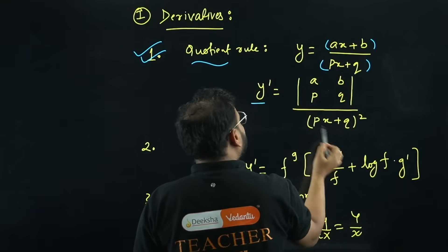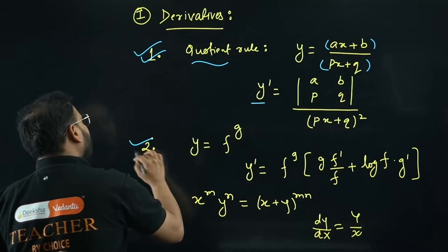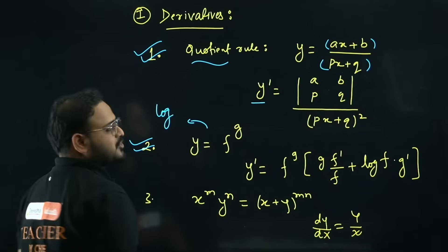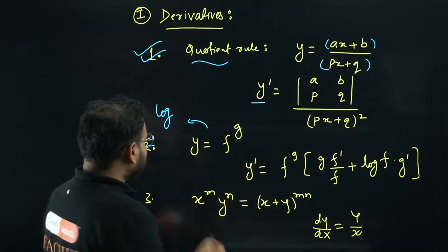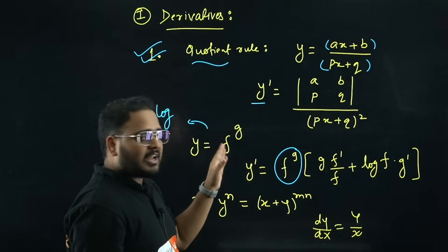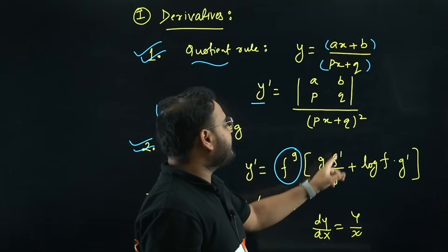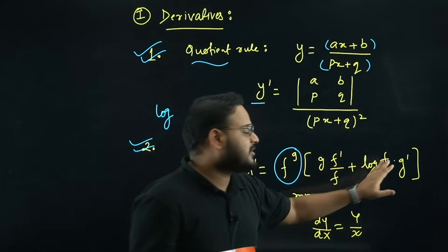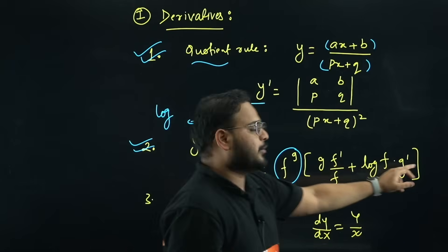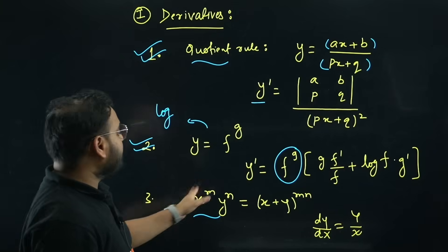Trick 1: Whenever you have a quotient rule involved and the form is (ax + b)/(px + q), you can find the derivative as the determinant of coefficients [a, b; p, q] divided by (px + q)². Trick 2: When you have y = f(x)^g(x), apply log. The formula gives: dy/dx = f^g · [g · (f'/f) + g' · log(f)].